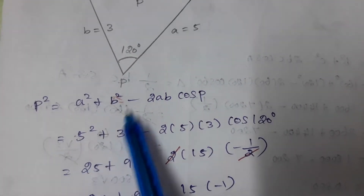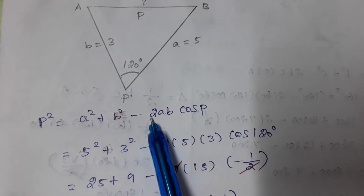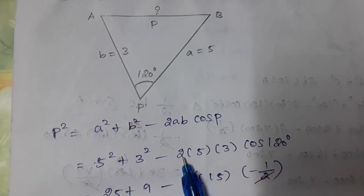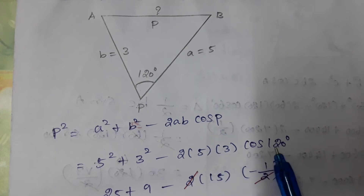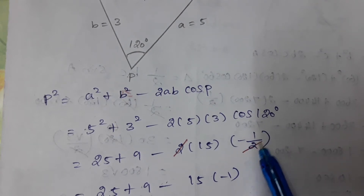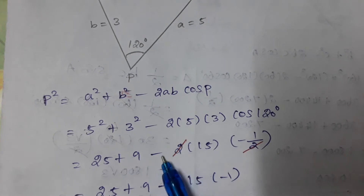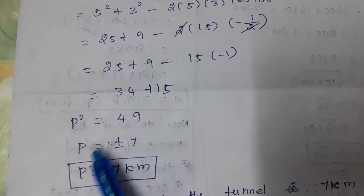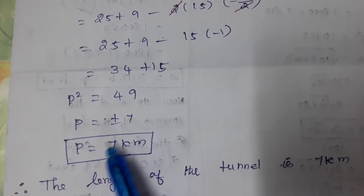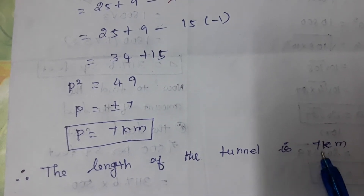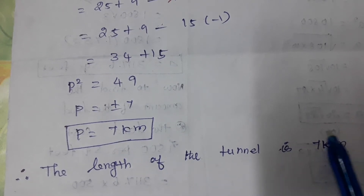The solution uses the cosine formula: AB² = AP² + BP² − 2·AP·BP·cos(P). Substituting: AB² = 5² + 3² − 2×5×3×cos(120°). Since cos(120°) = −1/2, this gives AB² = 25 + 9 + 15 = 49. Therefore AB = 7 km. The length of the tunnel is 7 kilometers.